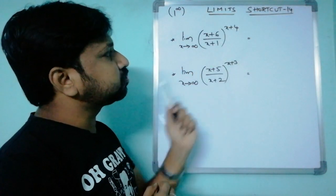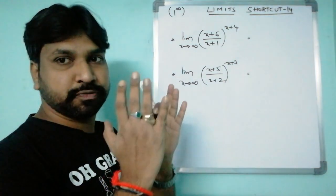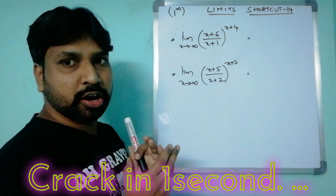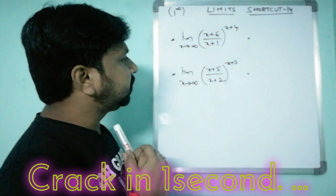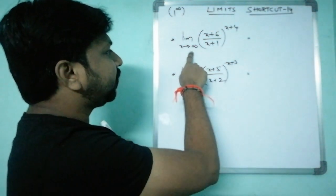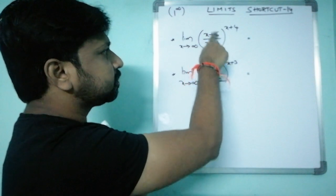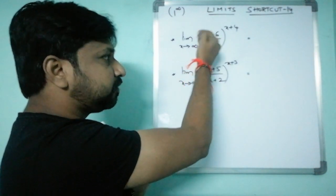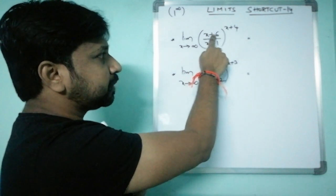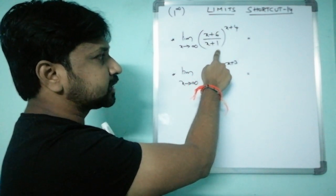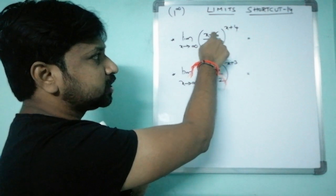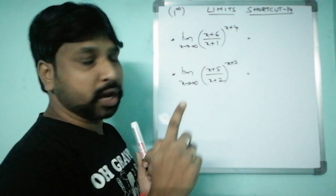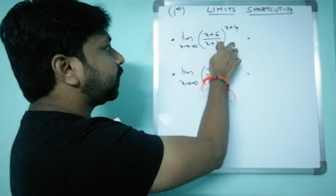The problem is: limit x tends to infinity of (x+6)/(x+1) whole power (x+4). First, let's check whether it is 1^∞ form or not. As x tends to infinity, take x as the highest power common. Cancel inside the bracket — you get (1 + 6/x) / (1 + 1/x). As x→∞, both 6/x and 1/x go to 0, giving 1/1 = 1. So the base becomes 1.